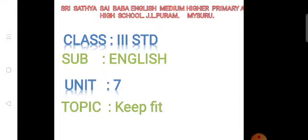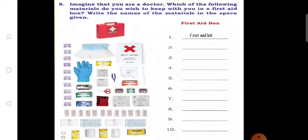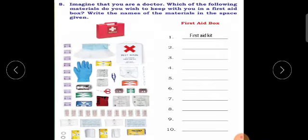Now continue that lesson. All of you open your textbook. Open this page. Look at the heading: Imagine that you are a doctor. Which of the following materials do you wish to keep with you in a first aid box? Write the names of the materials in the space given below. See, here are some materials.